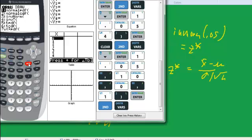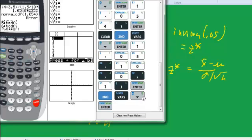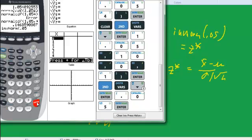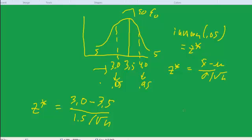Okay, invnorm 0.05, okay, negative 1.64. So we have negative 1.64, so all we have to do is manipulate algebra, we move the square root of n up to the numerator and move everything over, and we can solve for n. And so that's pretty much all we need to know about sampling distributions. See you next time.